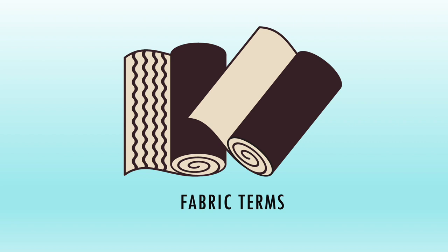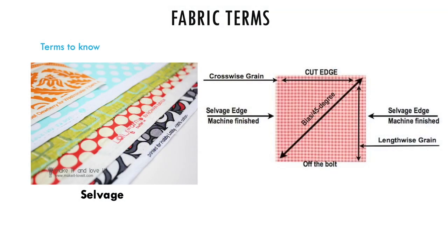There is a lot of fabric terminology you'll need to know before you can follow along with a pattern. Let's go over some of the basic terms you'll see often while sewing and buying fabric. The outer edges of a length of fabric are called the selvedge. This area is tightly woven so as not to unravel. It may have manufacturer's info printed on it like the designer, the manufacturer, and the fiber content of the fabric.